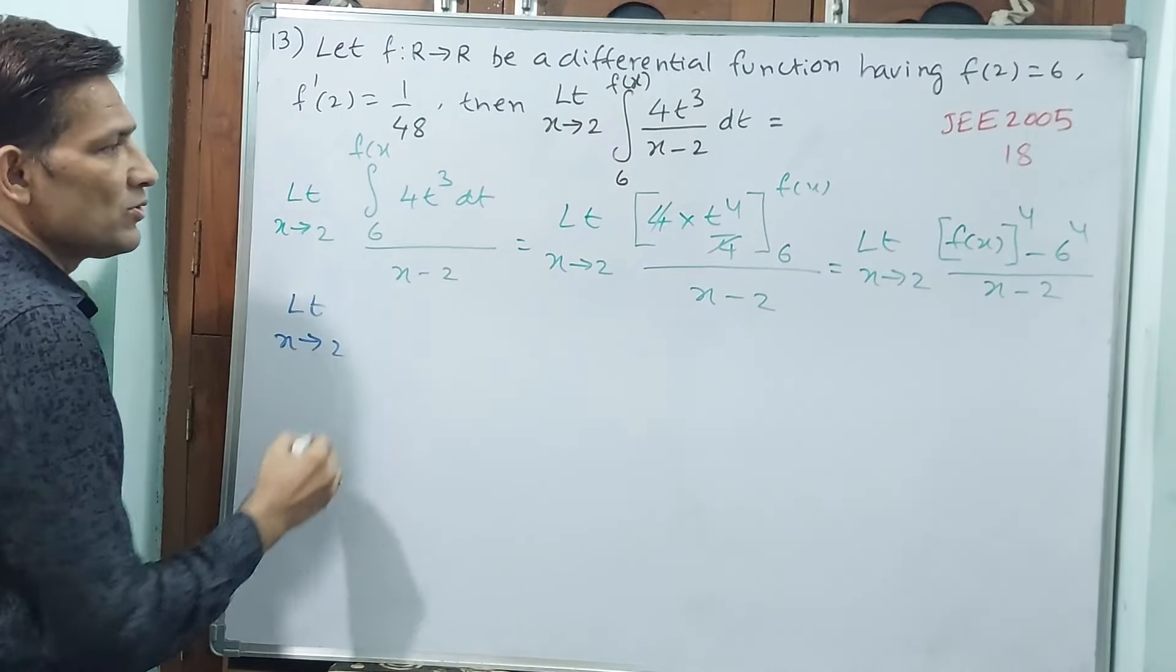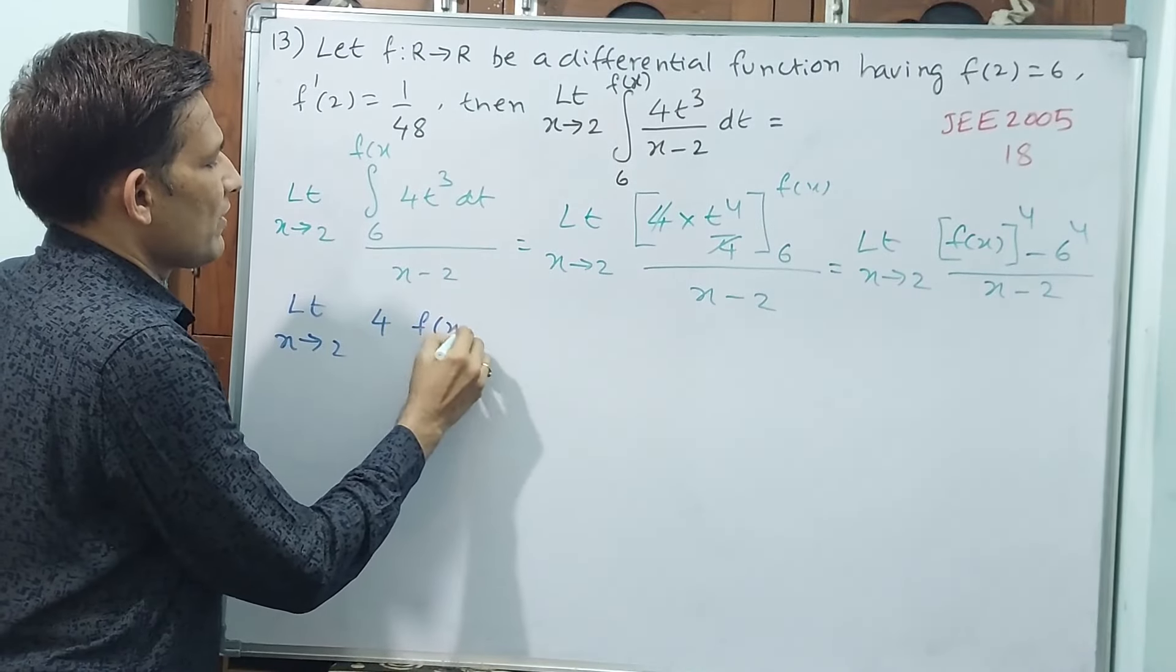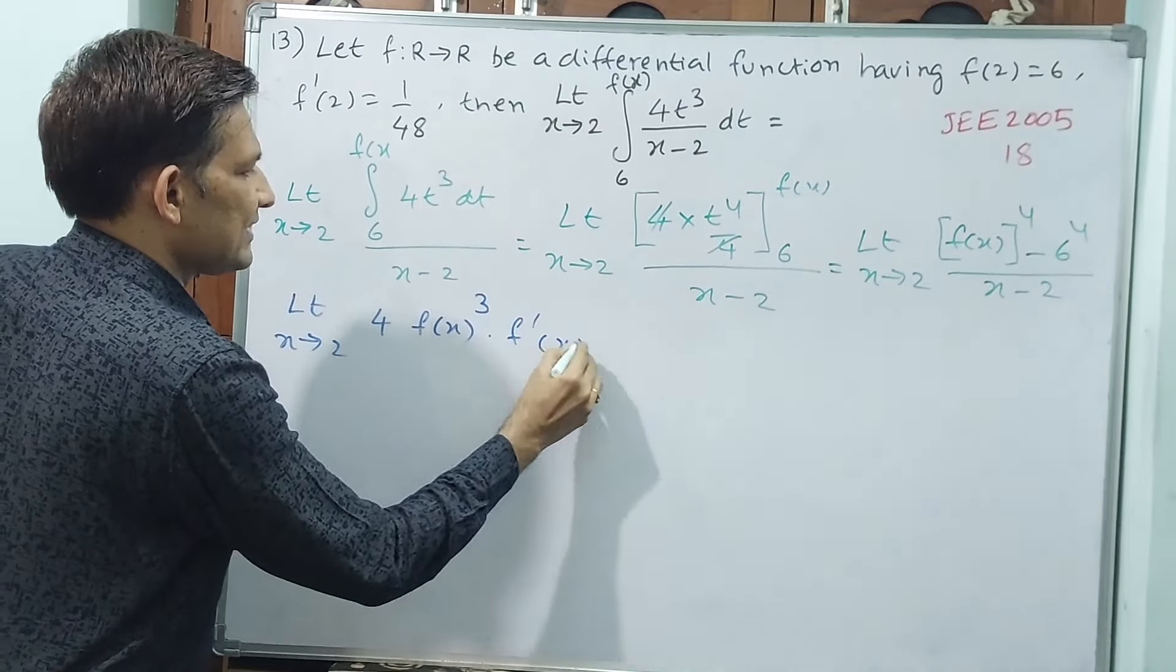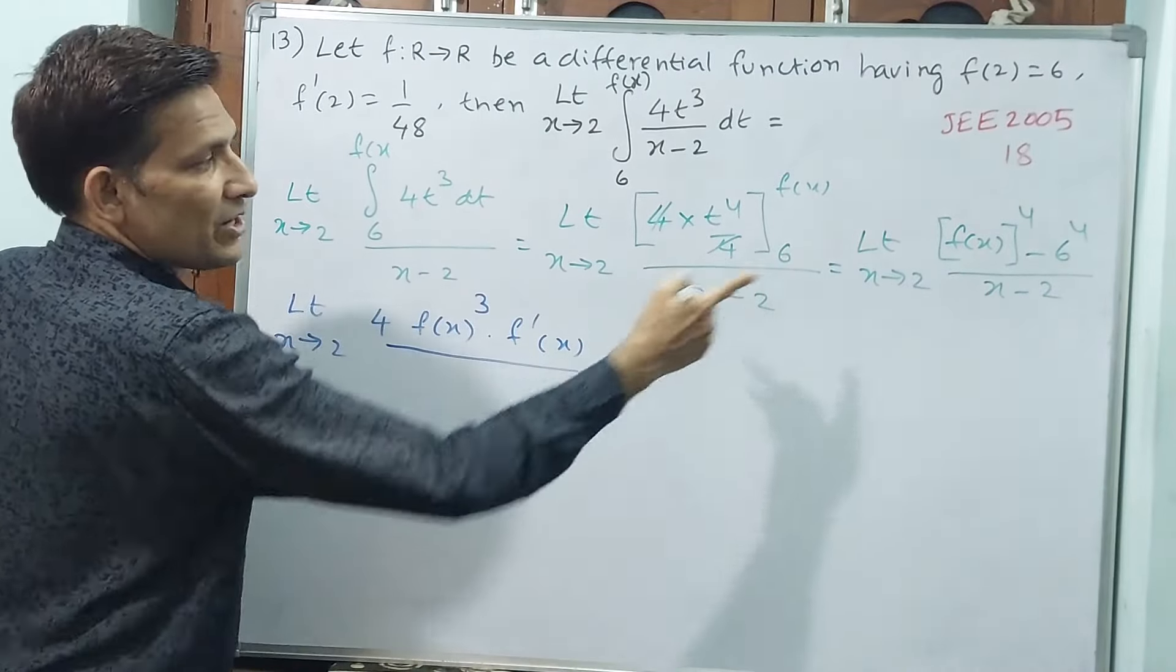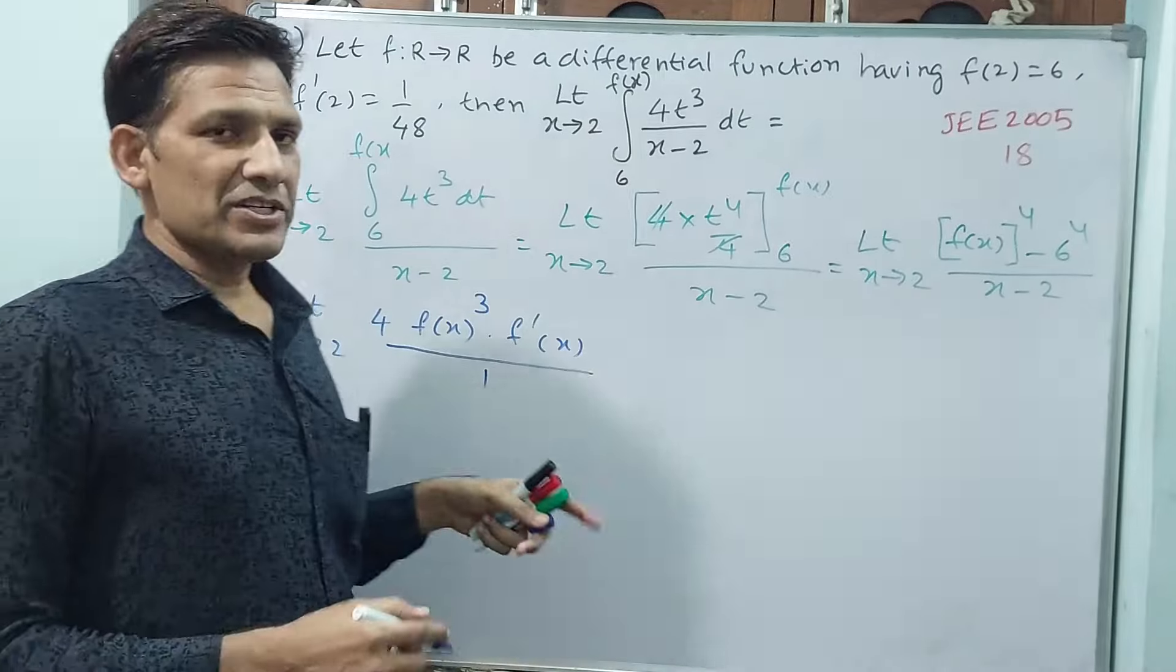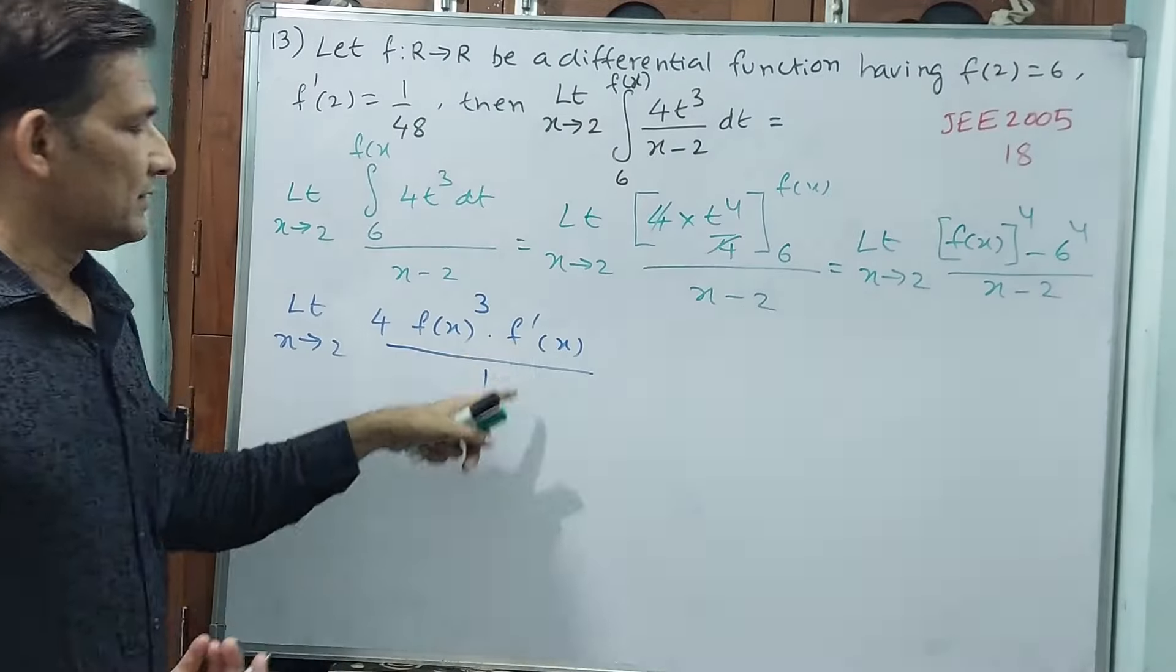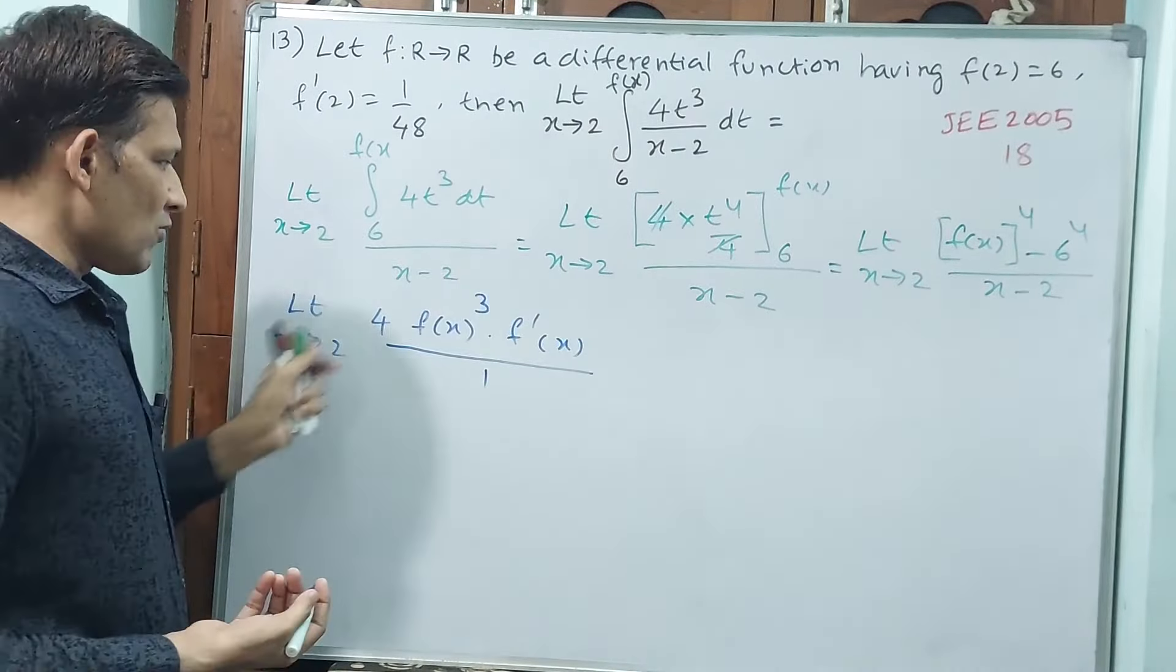L'Hospital rule apply. Limit x tends to 2, 4 into f of x whole cube into f' x. That is constant 0, divided by x is 1. Differentiated by L'Hospital rule. 4 into f cube, again f dash x. That is constant, 2 is constant, x is 1. Now you can apply.